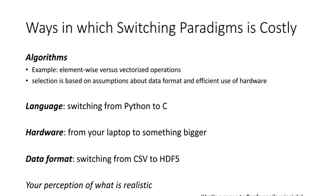Because we're operating on real hardware, we sometimes need to switch software choices based on hardware constraints — changing the algorithm, the programming language, or the data format. These hardware-induced choices are the things we can tune to deal with constraints.